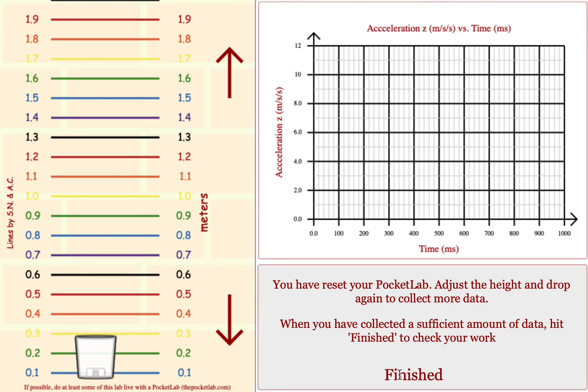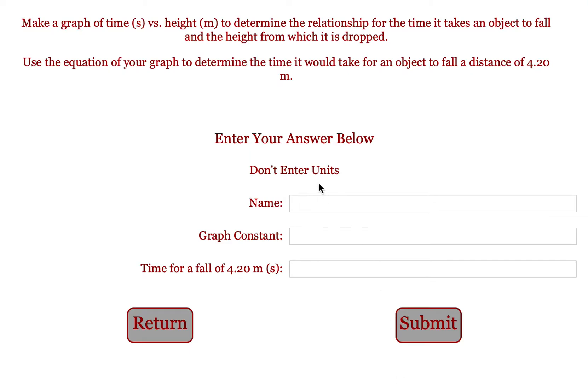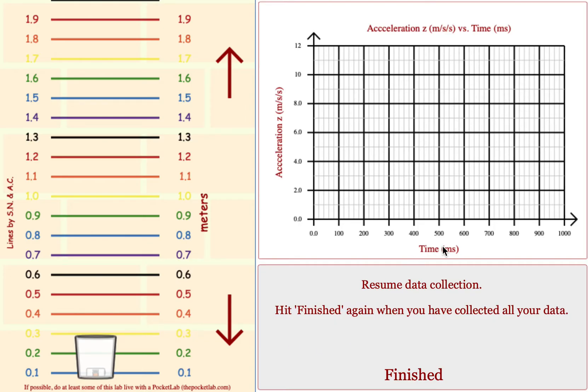When you are done all your trials, click on the finish button. Put in your name. Make a graph of time in seconds versus height in meters. So make sure you convert these milliseconds over to seconds.